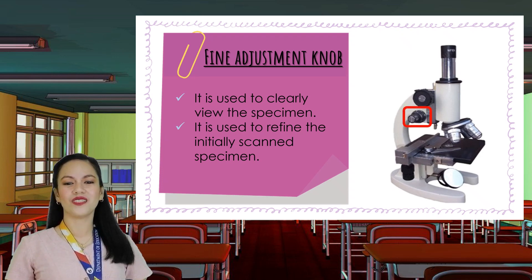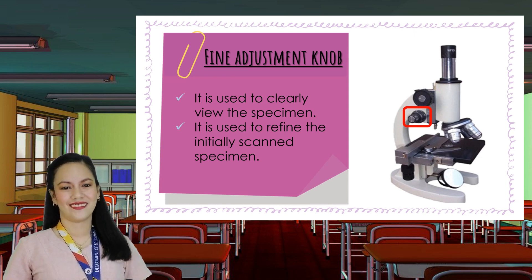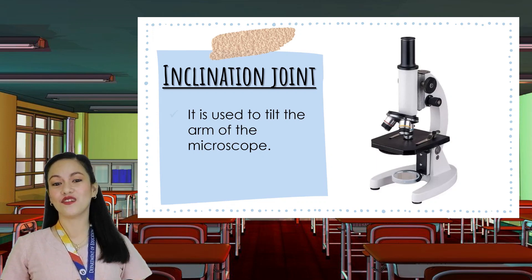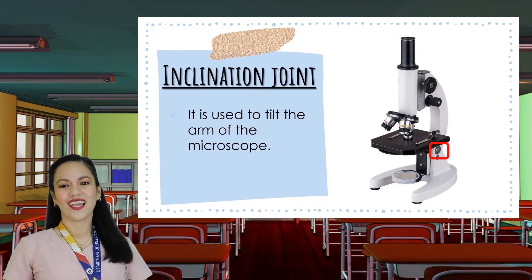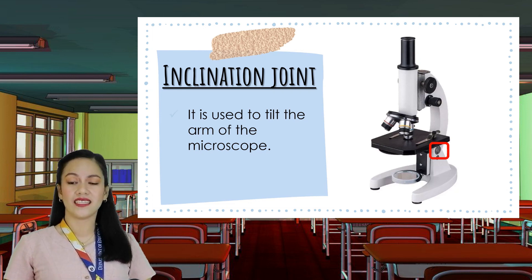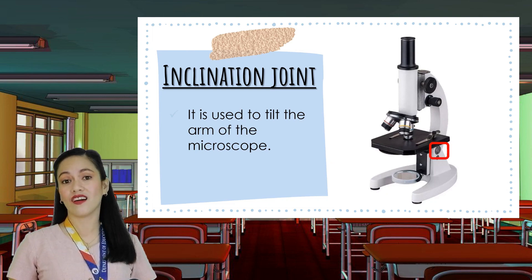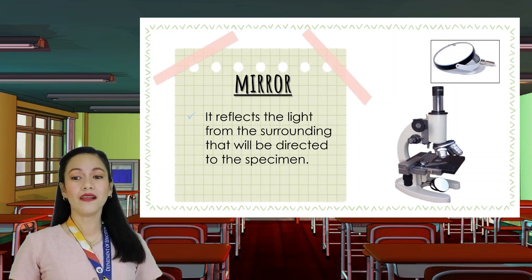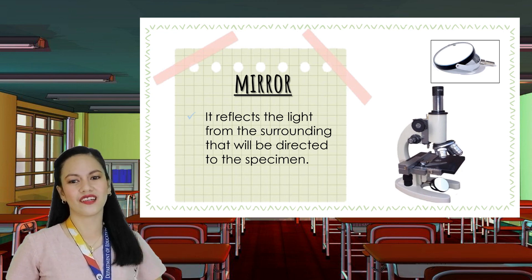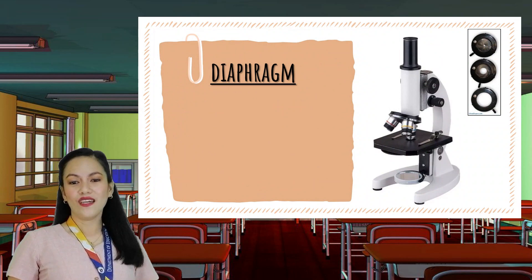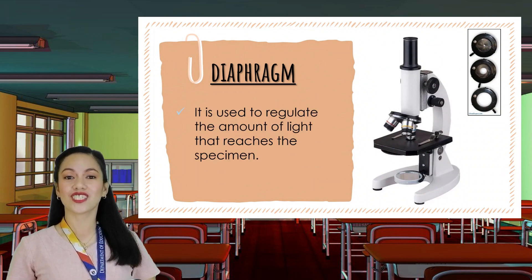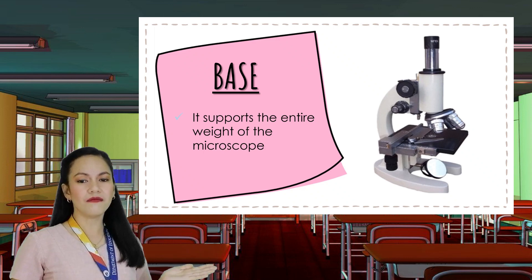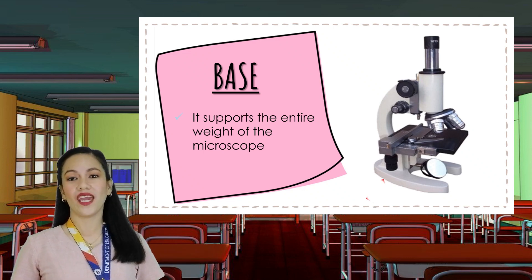We are almost done with all the parts of the microscope. Another part is the inclination joint, used for tilting the arm of the microscope. It gives you comfort in viewing the specimen since inclining it provides a wider reflection of light on the mirror. The mirror reflects surrounding light directed to the specimen. On top of the mirror is the diaphragm, used to regulate the amount of light that reaches the specimen. Lastly, the base is the bottom part of the microscope and supports its entire weight.